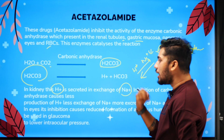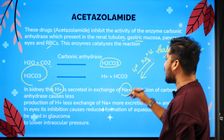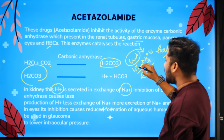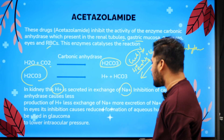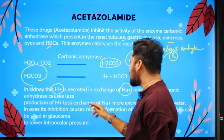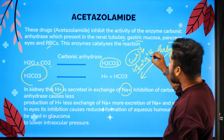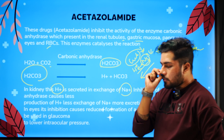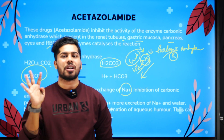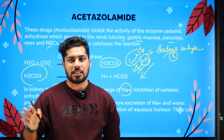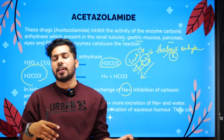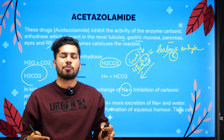In our kidneys, we have H⁺ exchanged for sodium. Inhibition of carbonic anhydrase causes less production of H⁺. If we inhibit this enzyme, there is less H⁺ available for exchange with sodium, resulting in less sodium reabsorption and more excretion of sodium and water. So: less H⁺ → less exchange with sodium → more excretion of sodium and water.